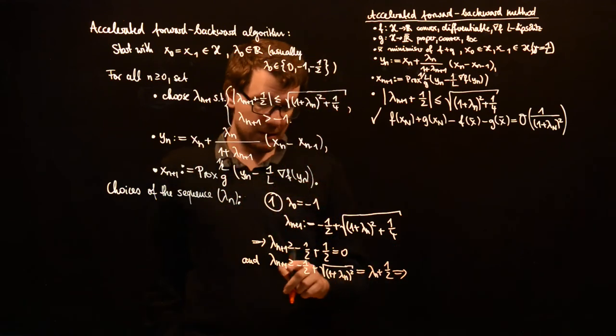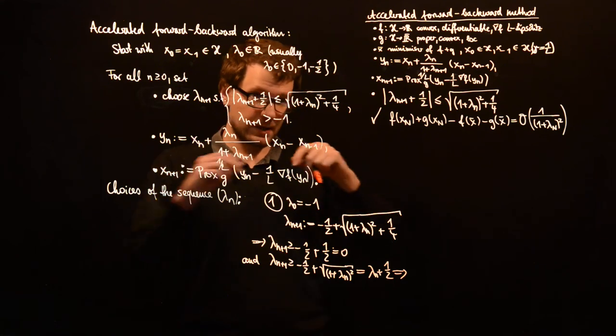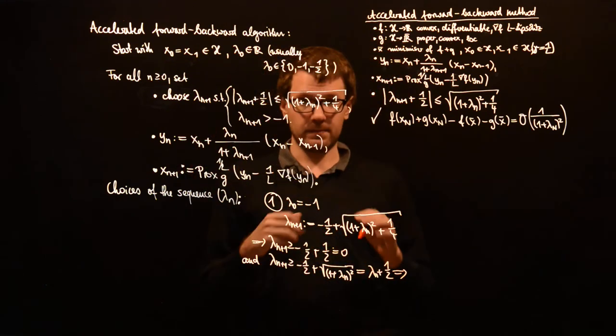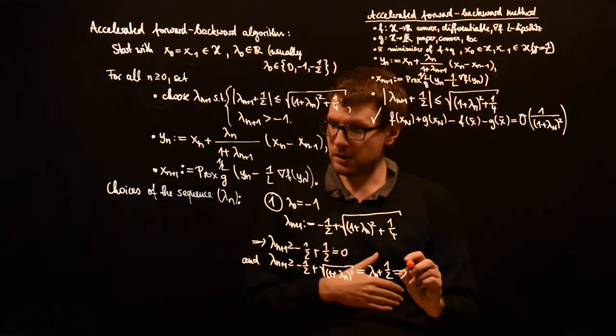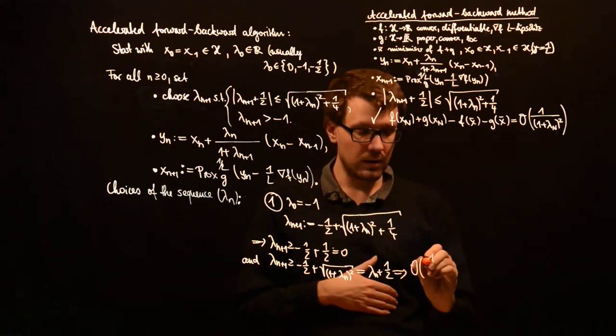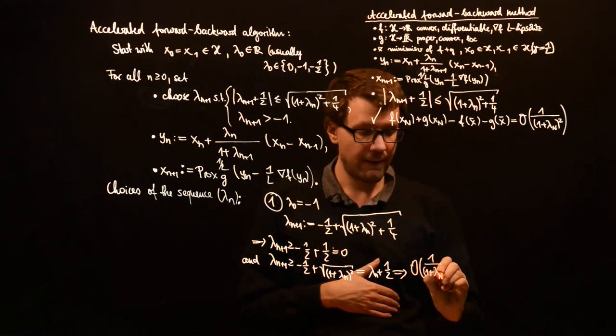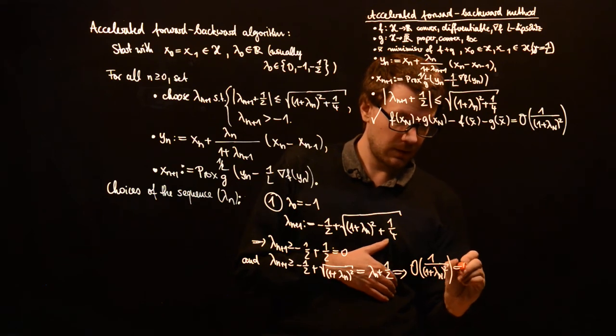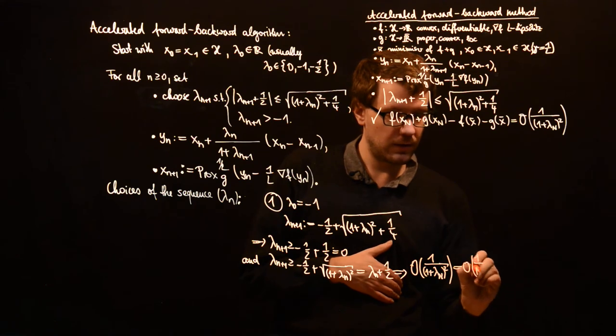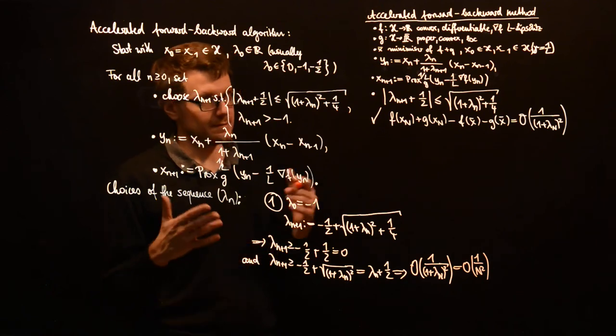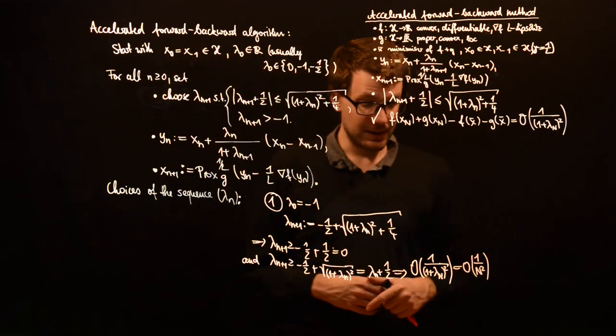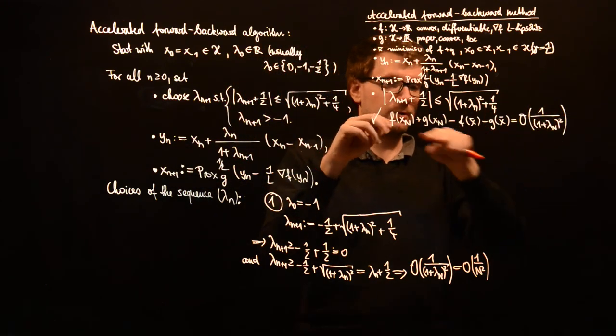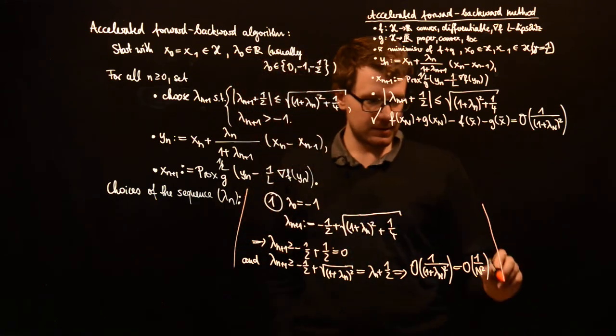And it also holds that this is greater or equal than minus one half plus square root of one plus lambda_n squared, which is equal to lambda_n plus one half. So this means that lambda_n is increasing with at least one half per step. And this means you have at least a linear growth. So this means that O of one over one plus lambda_n squared is at most O of one over n squared. So you can easily check that the one over n squared convergence rate holds, which we want here.